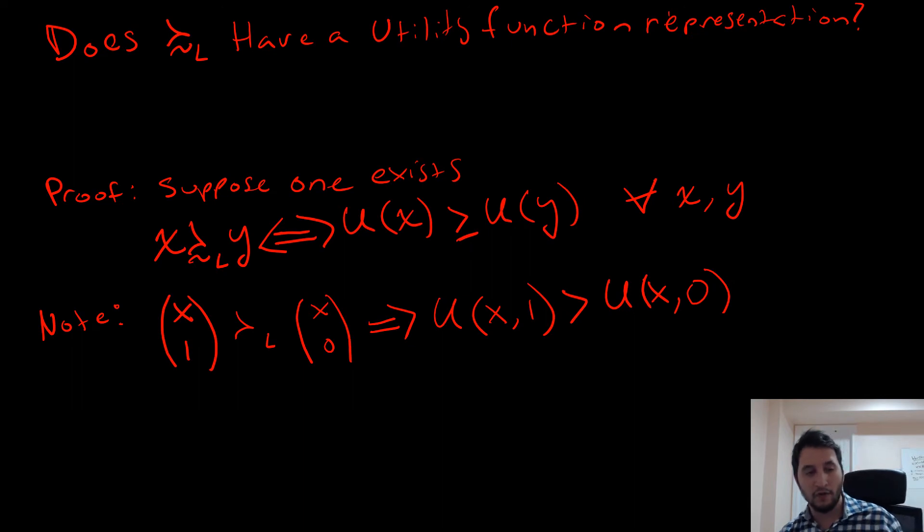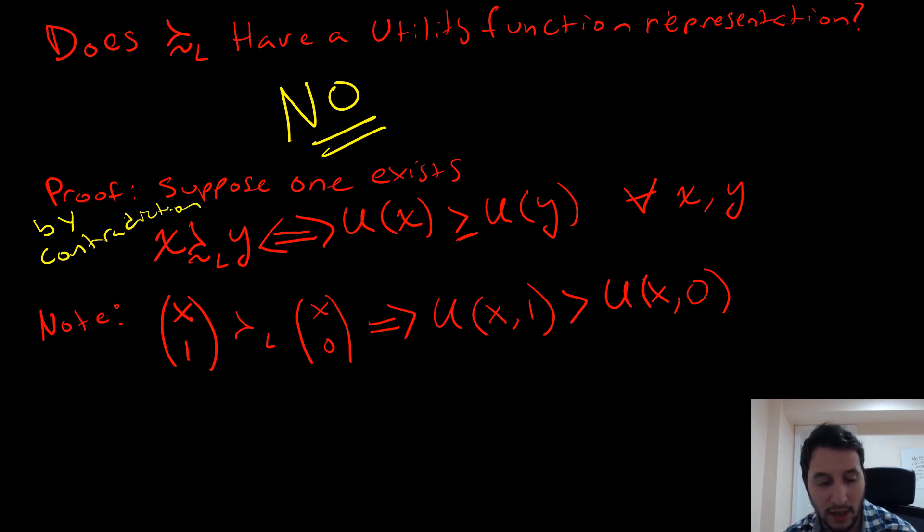So we're now going to move on to our second question, which is does our lexicographic preference relation have a utility function representation? And the answer to that is a big, fat no. That's a big, old no. And the proof for this is that we're going to use proof by contradiction. We're going to suppose that one exists. That means our lexicographic ordering between x and y has a parallel utility function for all x and y in R here.